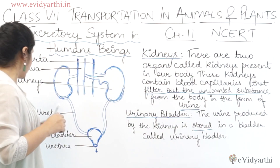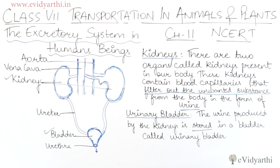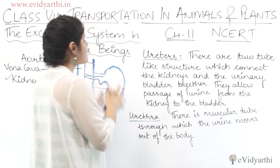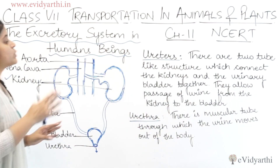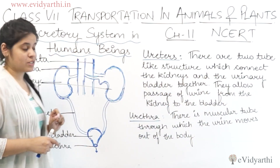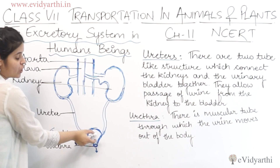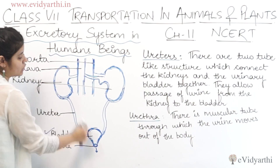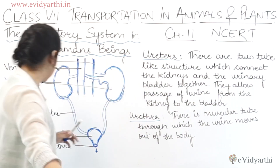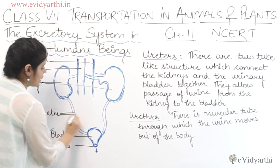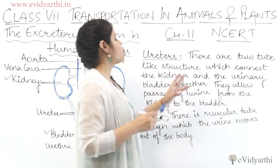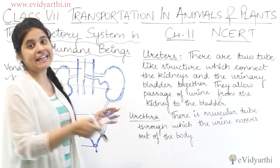Now we will talk about the next organ, which is the ureters. There are two tube-like structures which connect the kidney and the urinary bladder together — these two tubes are called ureters. They allow the passage of urine from the kidney to the bladder.